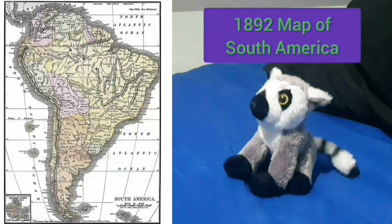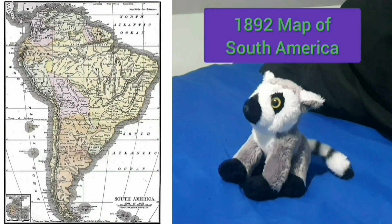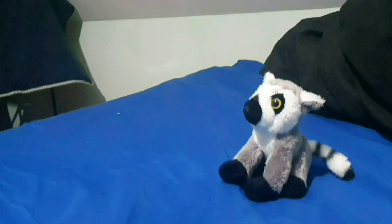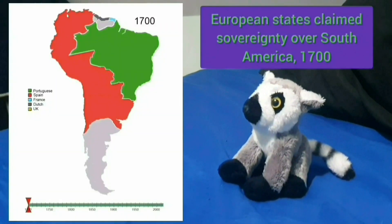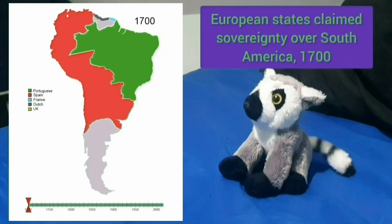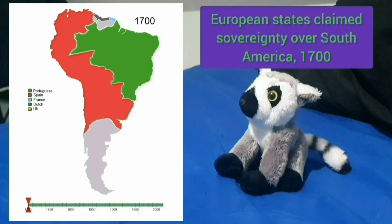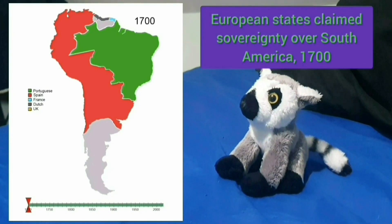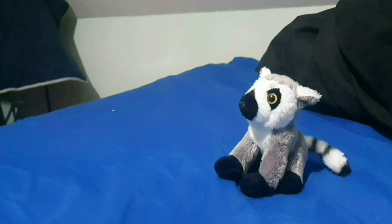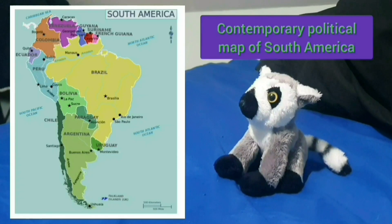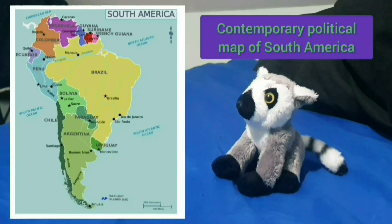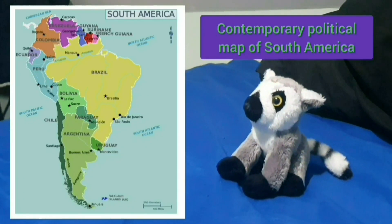1892 Map of South America. European states claimed sovereignty over South America. Contemporary political map of South America.